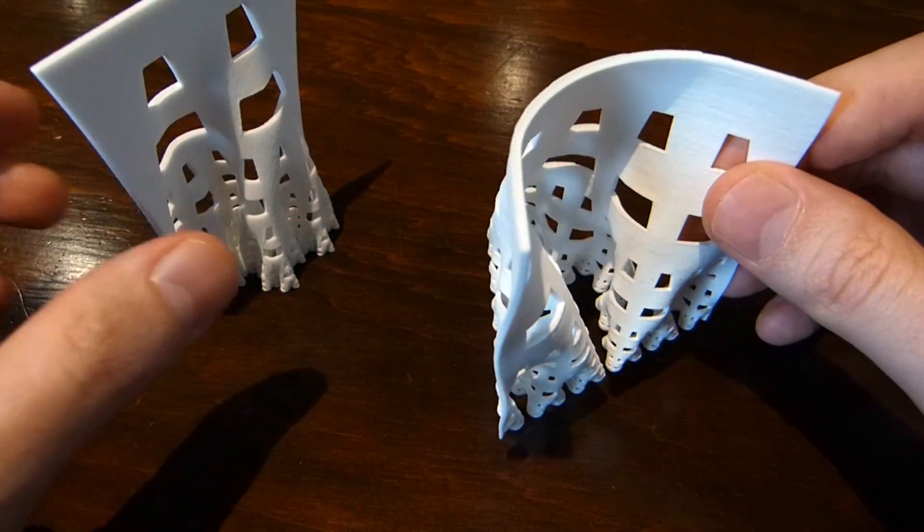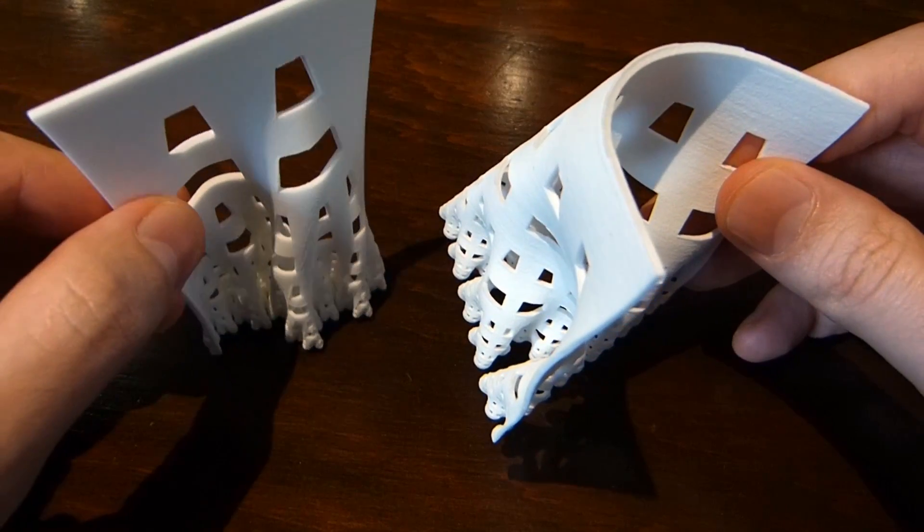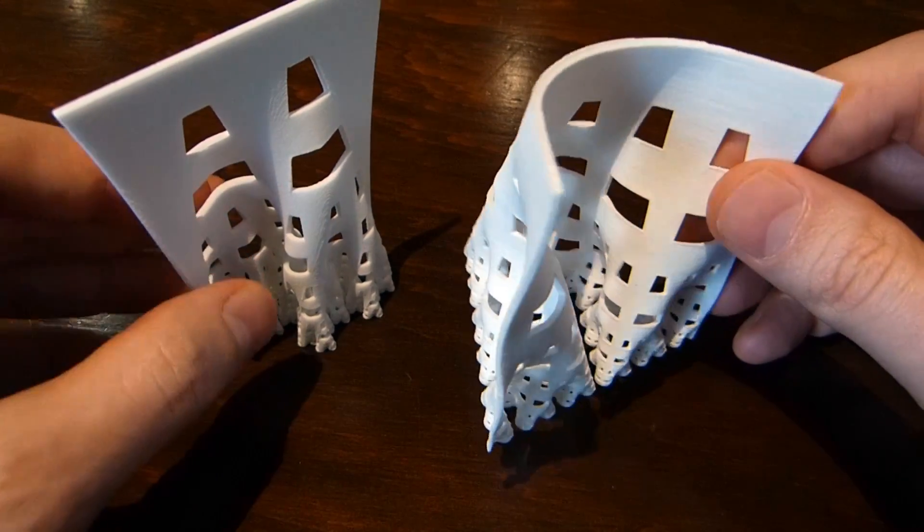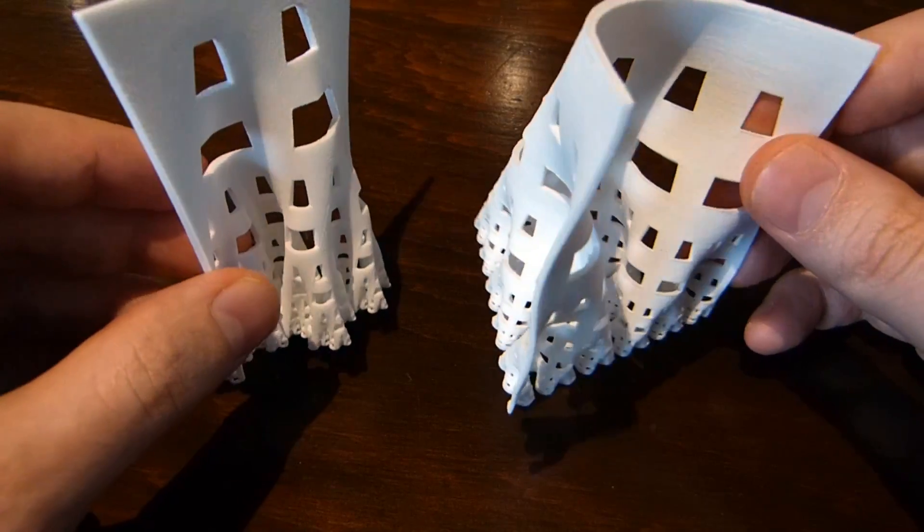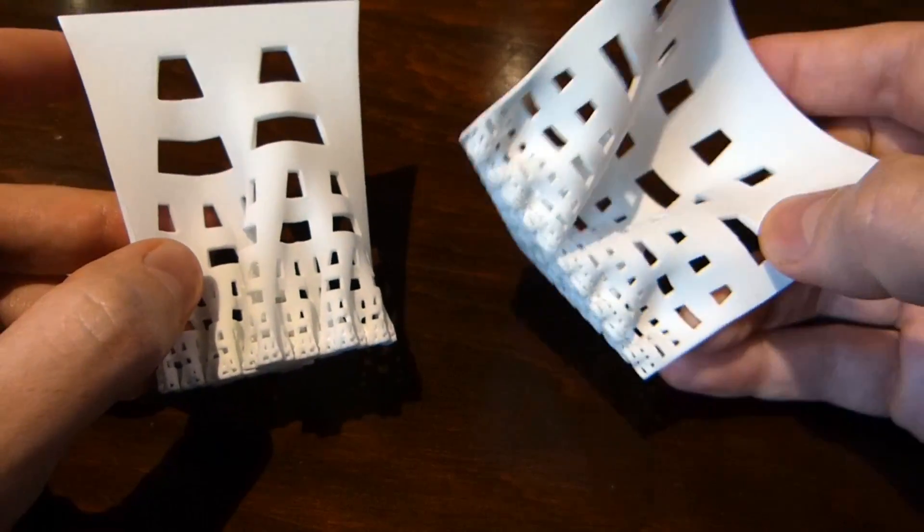They're really very similar rules in a way. One line segment becomes three, the angle is 60 degrees or 120 degrees, but you get very different results.